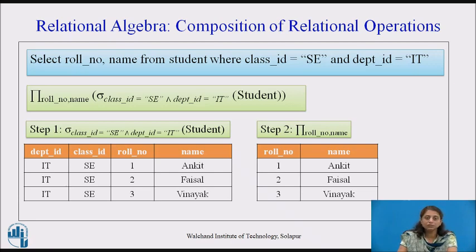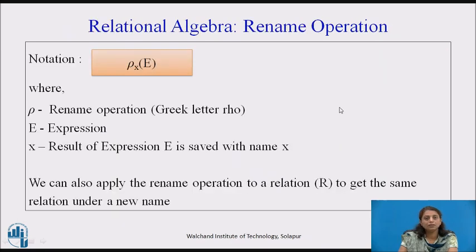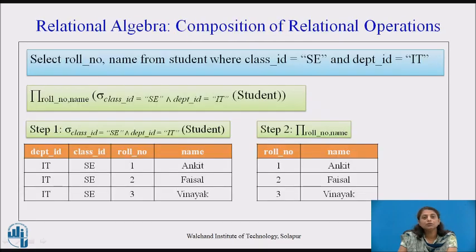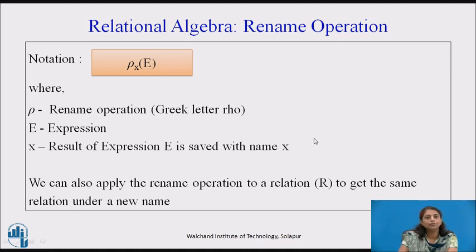The sequence of operations and their properties — whether they are associative, commutative, and so on — will be seen in the next lecture. The next operation is rename. In relational algebra, the new relation obtained does not have any name. If we want to use it further in a subsequent operation, we must rename it using the rename operation, denoted by the Greek letter rho. X is the name given to the result and E is the relational algebra expression.